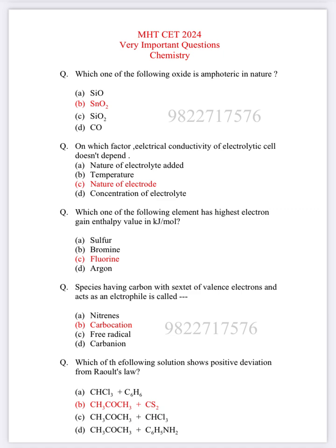Which one of the following elements has highest electron gain enthalpy value in kilojoule per mole? The correct answer is C, Fluorine. The decreasing order is Fluorine, then Bromine, Sulfur, and last is Argon.